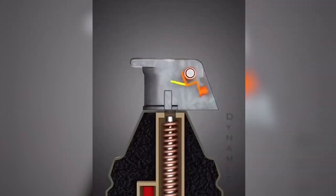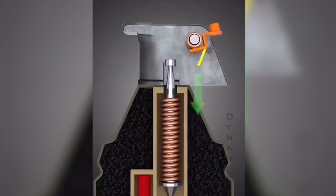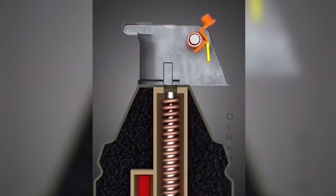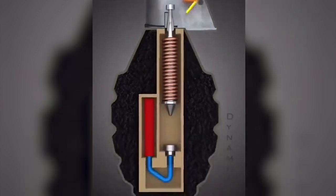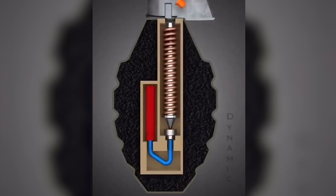Detonating mechanism: Fuse - A device that ignites the explosive charge. It has a time delay to allow the thrower to move away before detonation.